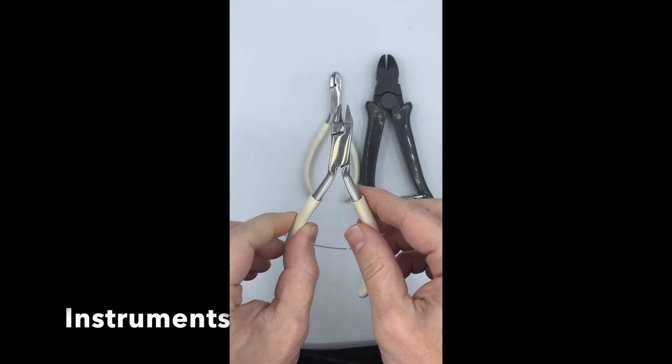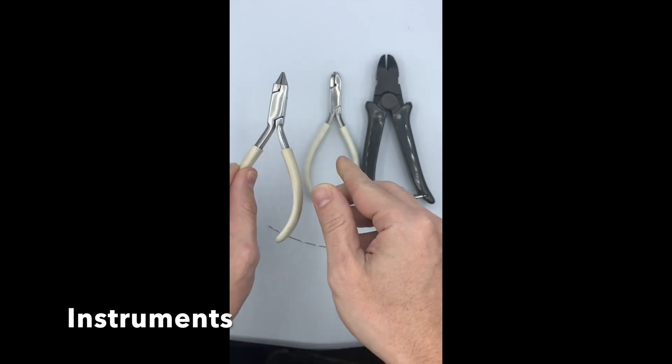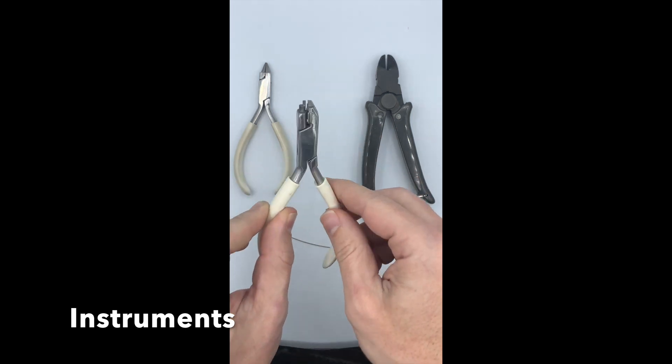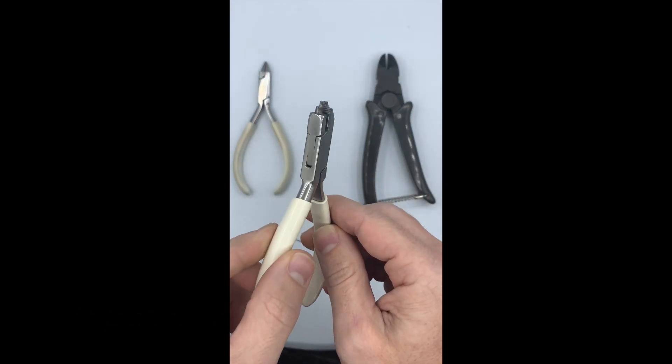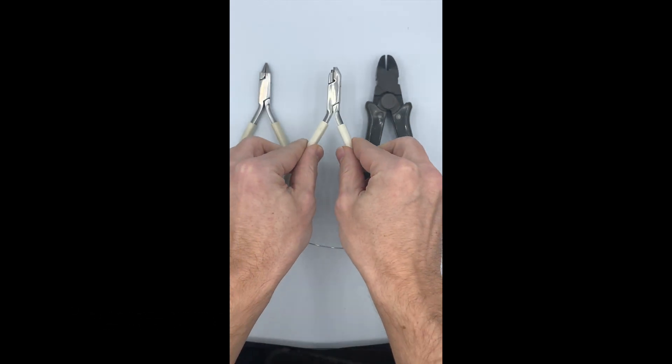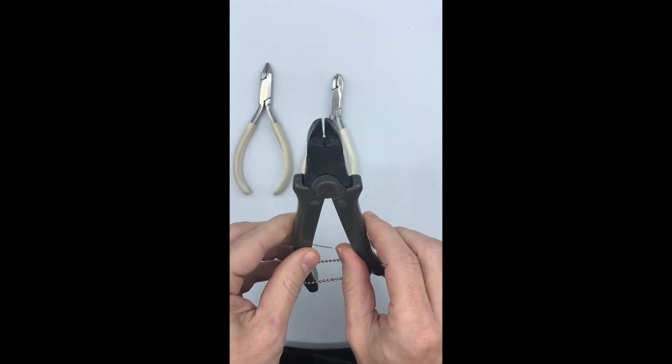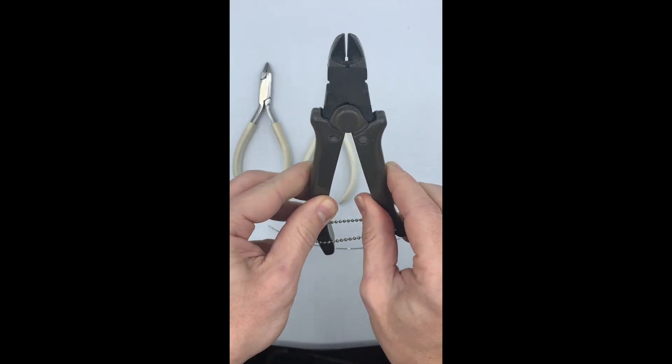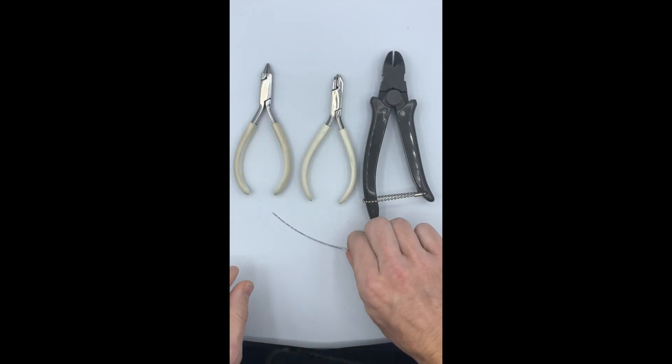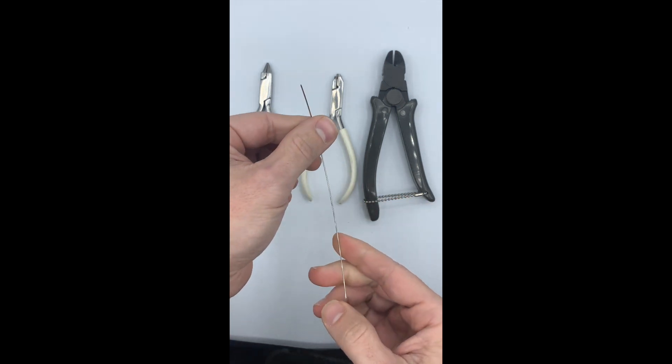The basic instruments for bending a bow are a 139 plier, a Hawley loop forming plier if you have one, a wire cutter, and a 6 inch length of 0.032.